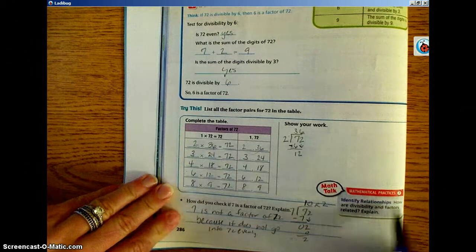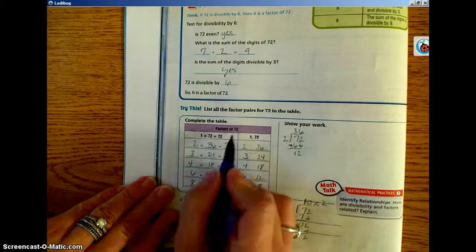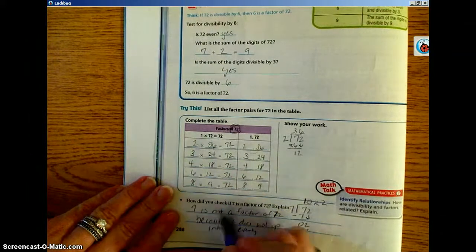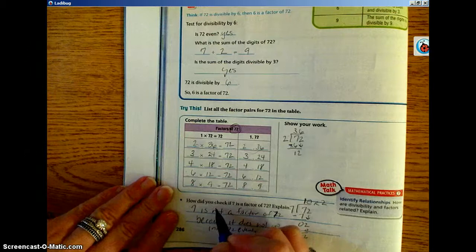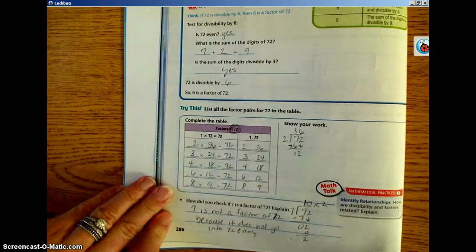Identify relationships. How are divisibility and factors related? Explain. Guys, a number, so in this instance it's 72, is divisible by all of its factors. If it's not divisible, then it's not a factor.